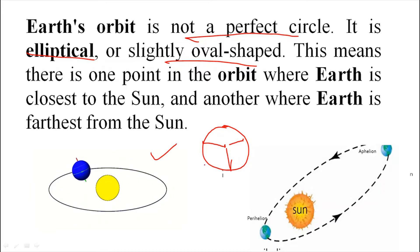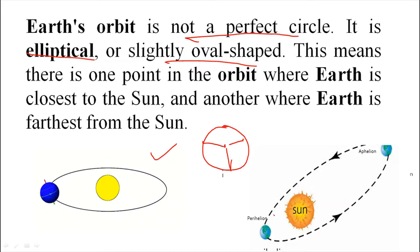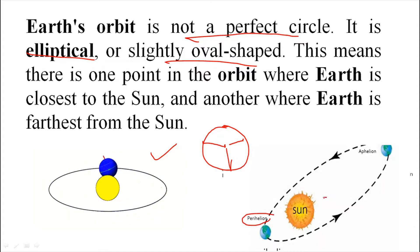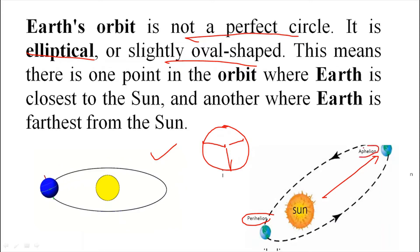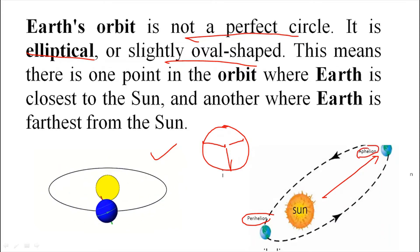When Earth in its orbit is closest to the sun, this is called perihelion, and when Earth is farthest from the sun, that is called aphelion. So I hope now you understand what is perihelion and what is aphelion.